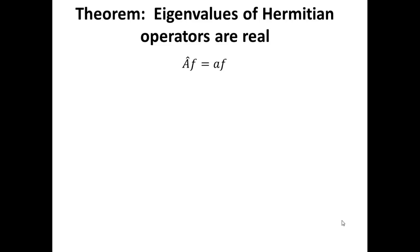We call this an eigenvalue equation because the function f is unchanged. We call it the eigenfunction. And the scalar value a, we call it the eigenvalue.